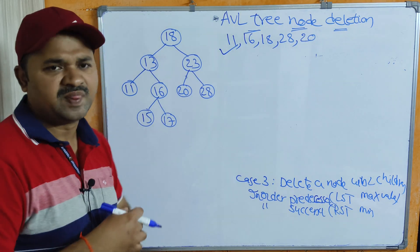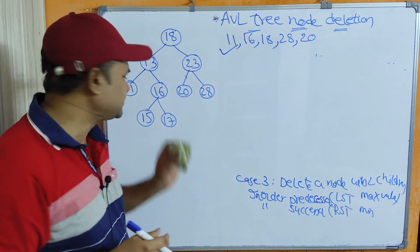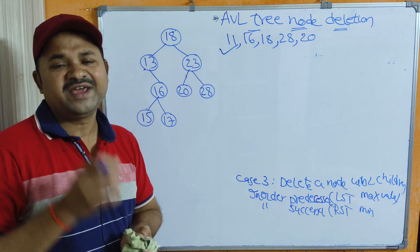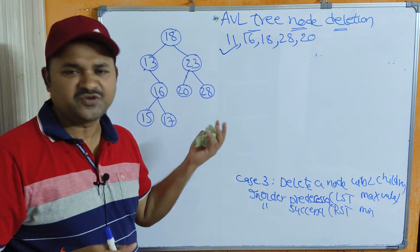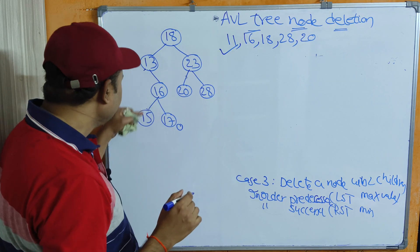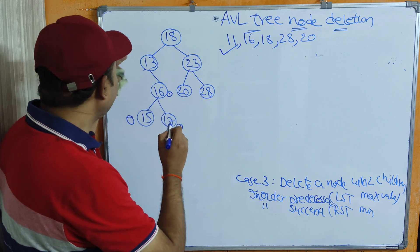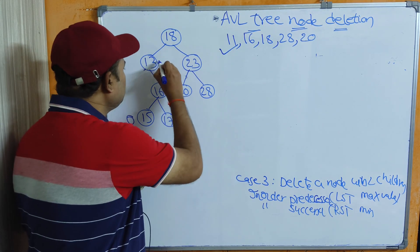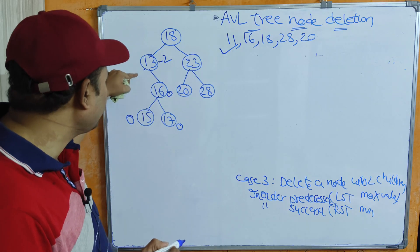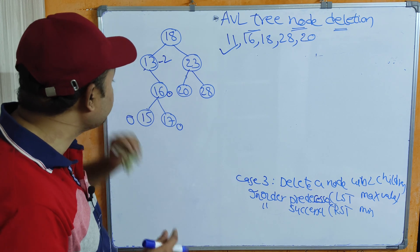After performing the deletion operation, we have to check whether the tree is balanced or not by calculating the balance factor. For node 15 it is 0. For node 17 it is 0. For node 16, left subtree height is 1, right subtree height is 1, so 1 minus 1 equals 0. For node 13, left subtree height is 0 and right subtree height is 2, so 0 minus 2 equals -2. So node 13 is an unbalanced node, and we have to perform balancing.